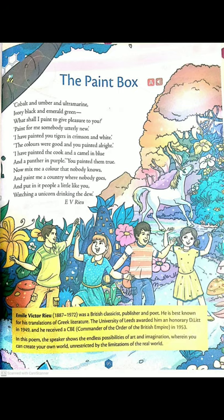Ivory black is a whitish-black color, and emerald green refers to the green color of an emerald stone. The poet asks, 'What shall I paint to give pleasure to you?' — meaning, what can I paint for you so that it can be a source of joy and happiness for you?